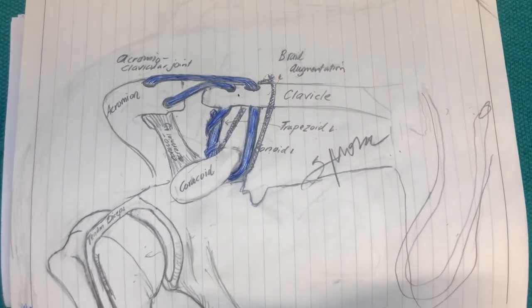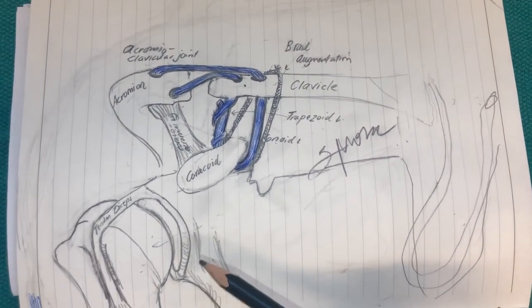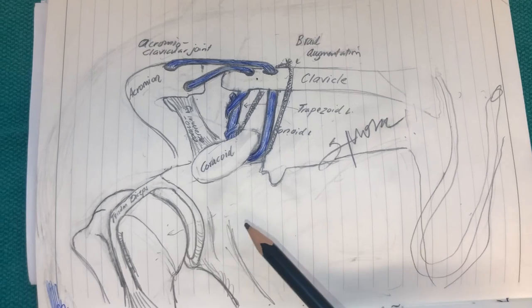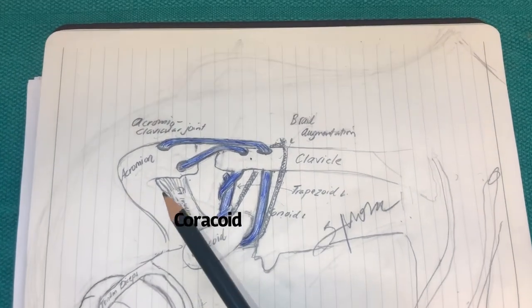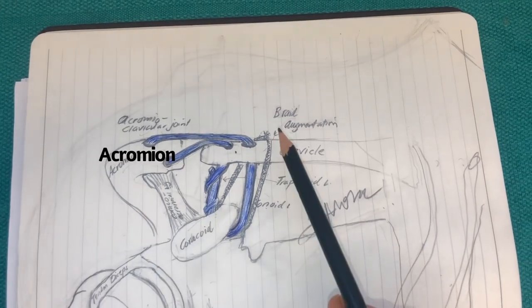So I created this diagram of a shoulder. Let me give you some perspective. This is the scapula, this is the glenohumeral joint, this is the coracoid of the scapula, this is the acromion of the scapula and the clavicle.